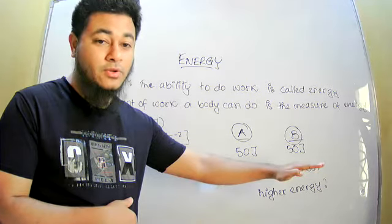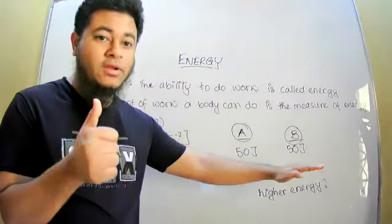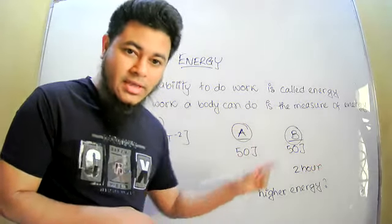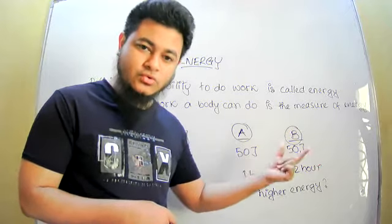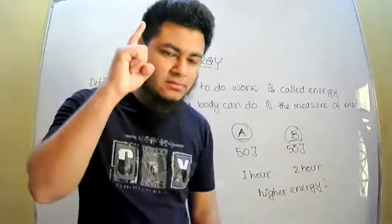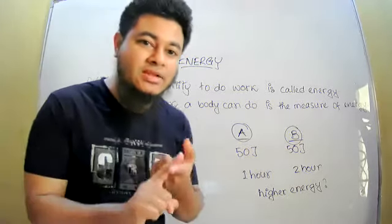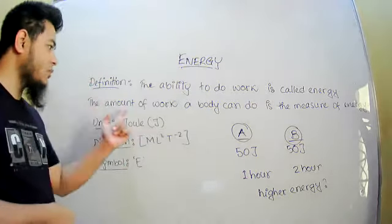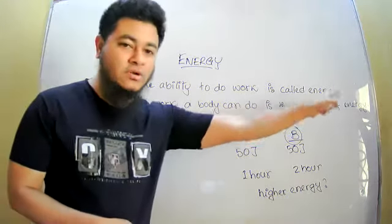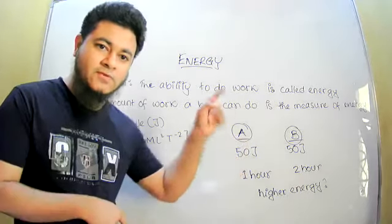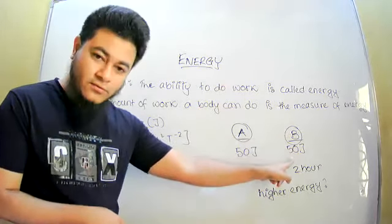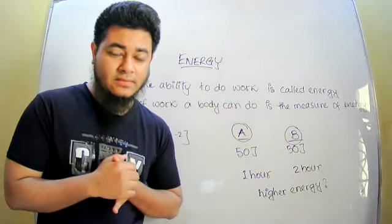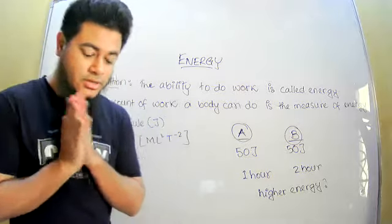Whenever we talk about energy, forget about time. If person A does 50 joules of work in one hour and person B does the same 50 joules but takes one year — no problem, we still say they both have the same energy, because they did the same amount of work. The amount of work a body can do is the measure of its energy. Both bodies can do 50 joules of work, so both have 50 joules of energy. It doesn't matter what amount of time they take.